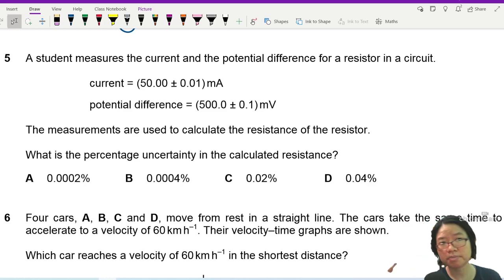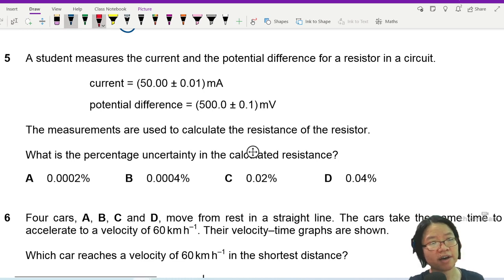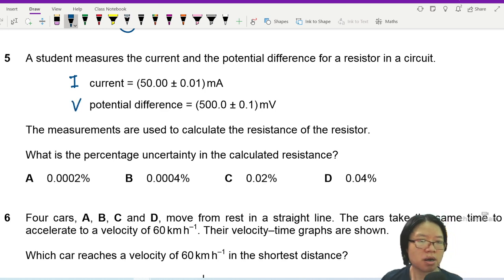Question 5. A student measures the current and the potential difference of a resistor in a circuit. So we have the value of I and we have the value of V, potential difference. Measurements are used to calculate the resistance of the resistor.